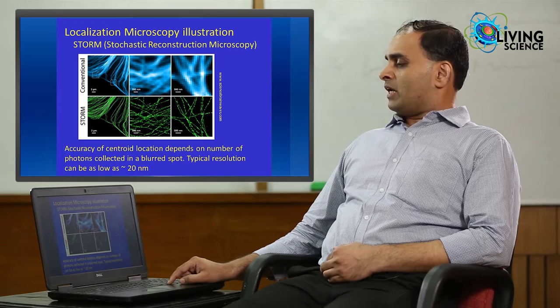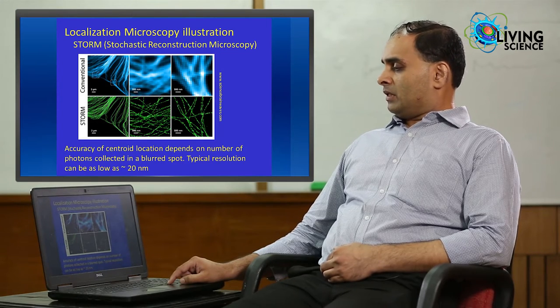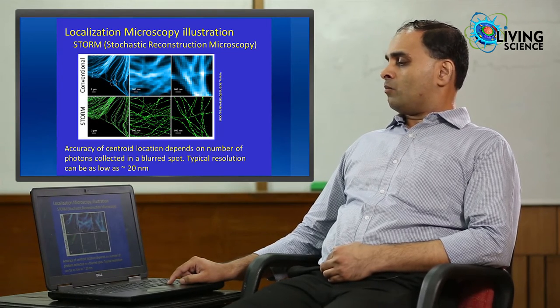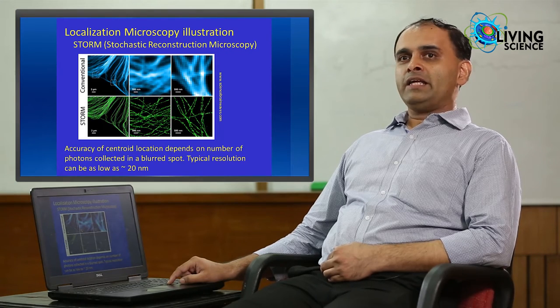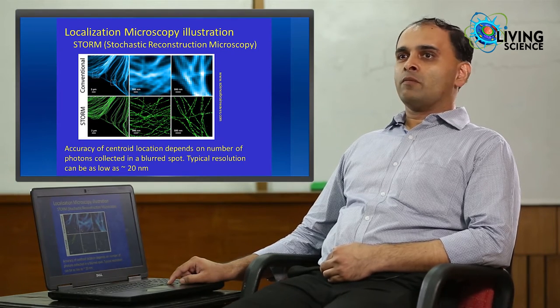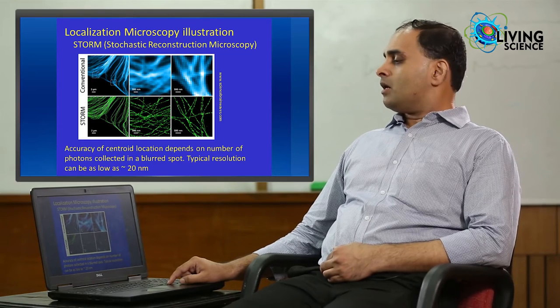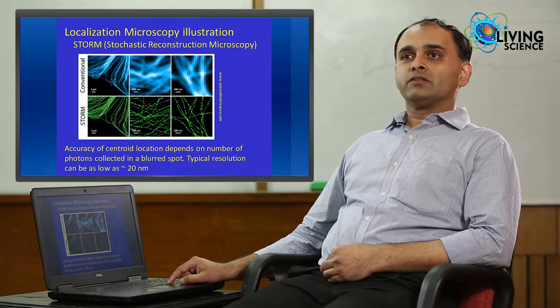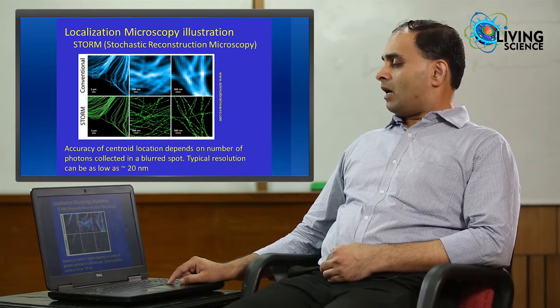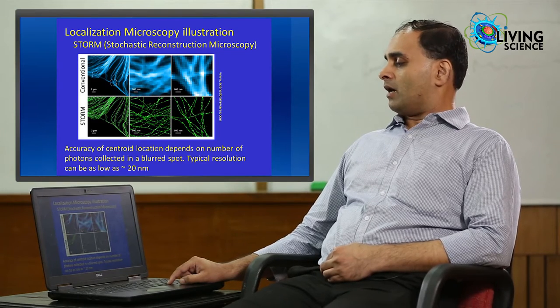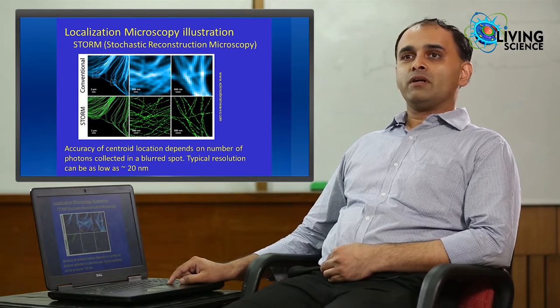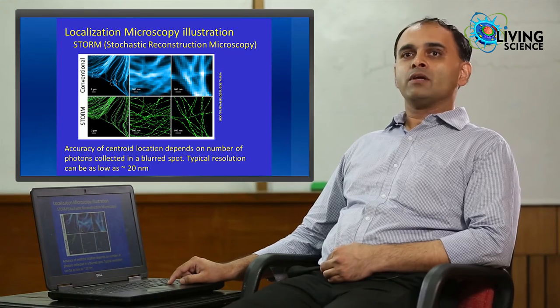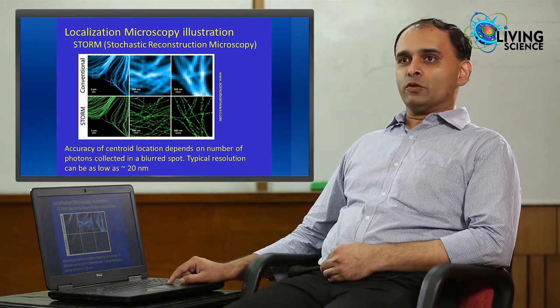Now, the accuracy of centroid location depends on the number of photons that are collected in each of these blurred spots. So, more the number of photons you collect, the better is your accuracy. But for typical illumination situations, you can get about thousands of photons and you can get resolution down to about 20 nanometer. So, we are now almost talking of molecular level resolution.